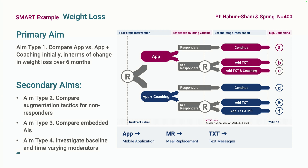The primary aim was about the non-inferiority question: is the app about the same in terms of outcomes compared to the app plus coaching as a stage-one intervention — knowing that something else is going to happen downstream? Secondary aims addressed what the best augmentation tactic for non-responders is — additional mHealth alone versus adding a traditional package — as well as comparing embedded adaptive interventions and examining baseline and time-varying moderators.